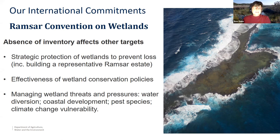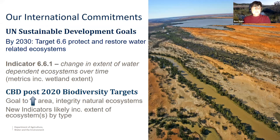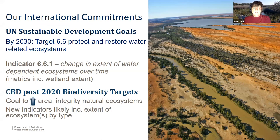There are other goals we're not meeting as well — the UN Sustainable Development Goals. We're meant to be protecting and restoring our water-related ecosystems. At the moment, we can't even report against that indicator about wetland extent. And in the next 12 to 18 months, there are going to be new biodiversity targets under the Convention on Biological Diversity — they likely will have a goal about increasing the area and integrity of natural ecosystems, and there'll be indicators around extent. And once again, we're unable to report on that.